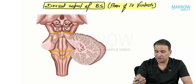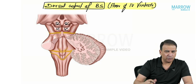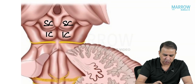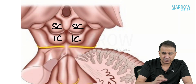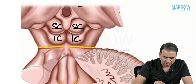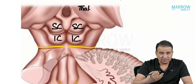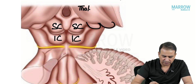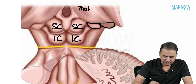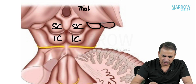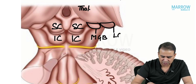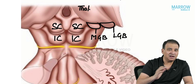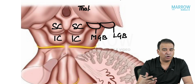Looking more closely at the dorsal aspect: behind the thalamus are the geniculate bodies — the medial geniculate body and the lateral geniculate body. The medial geniculate body is on the medial side, and the lateral geniculate body is more toward the lateral side. The medial and lateral geniculate bodies are part of the auditory and visual pathways respectively.